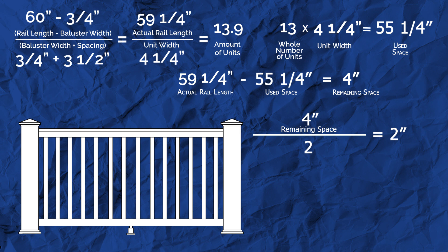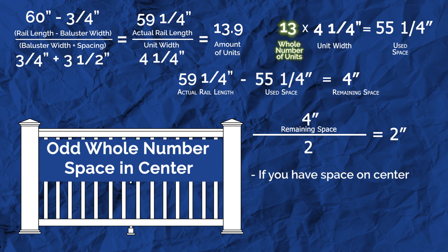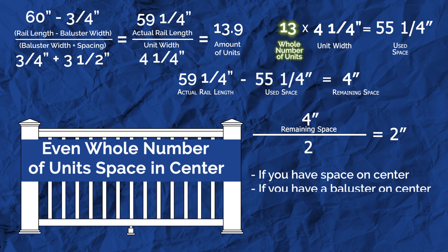If the first and last balusters in your section look like they're too close to the posts, go back and change the original baluster spacing to find one that works for your setup. Once you've found a combination that fits, you now know three important items about your railing section. If the whole number from your amount of units is odd, then you will have a space at the center of your rails. If it's even, then you will install a baluster on the center mark.